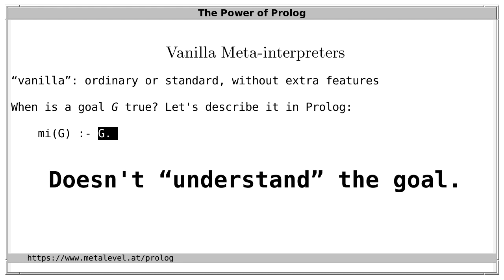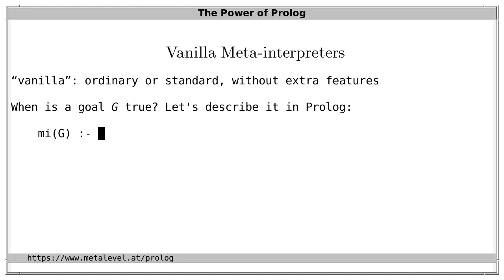We can't really count this as an interpreter because there's nothing explicit we can observe — in a sense, this interpreter doesn't understand the goal. So let's aim higher. G is certainly true if it's the atom true, because that built-in predicate is always true. So if G is the atom true, mi(G) should be true. We can write this compactly by pulling the unification into the head: 'mi(true) holds.'